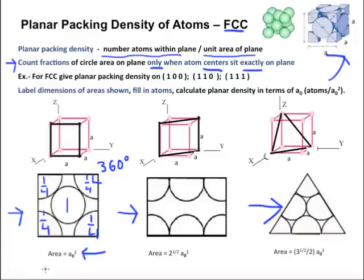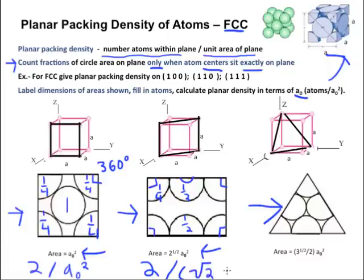So, this is a full circle, so this would be 1. This is a 90 degree angle, so this would be a quarter because 90 is a quarter of 360. Again, all of these would be 1/4, 1/4, all of these would be 1/4, then we take the number of atoms and divide it by the unit area of the plane, which was given to us for each plane. So, for the first one, we've got 2 divided by A0 squared. And again, we're doing these in terms of A sub 0. Now, let's do the next one.